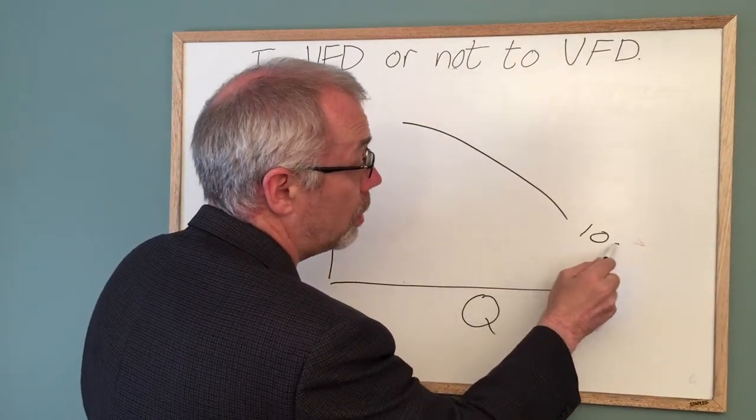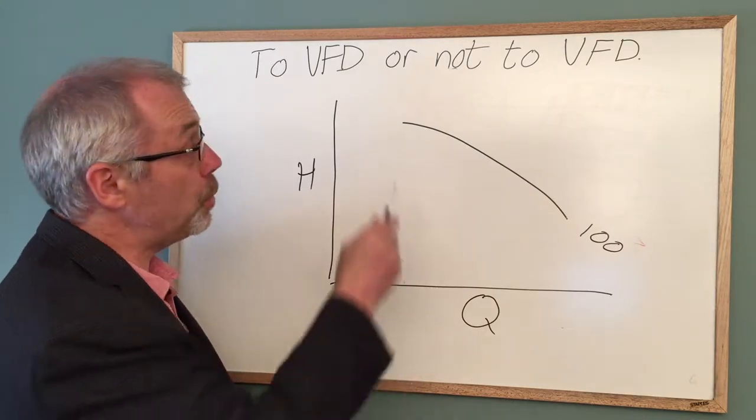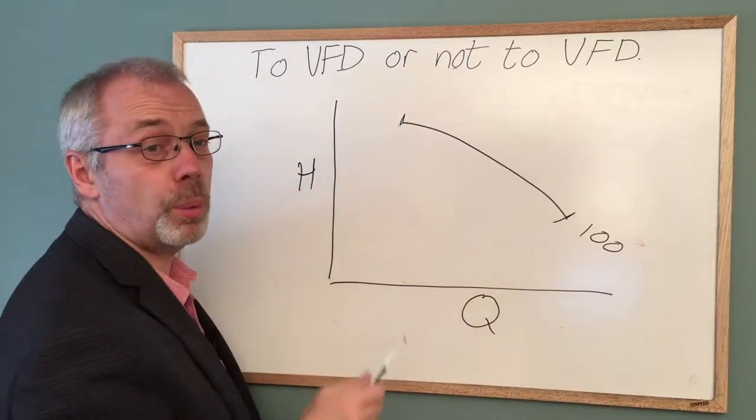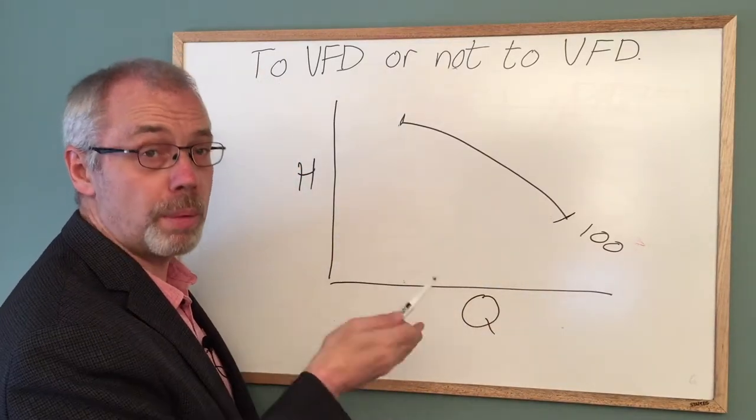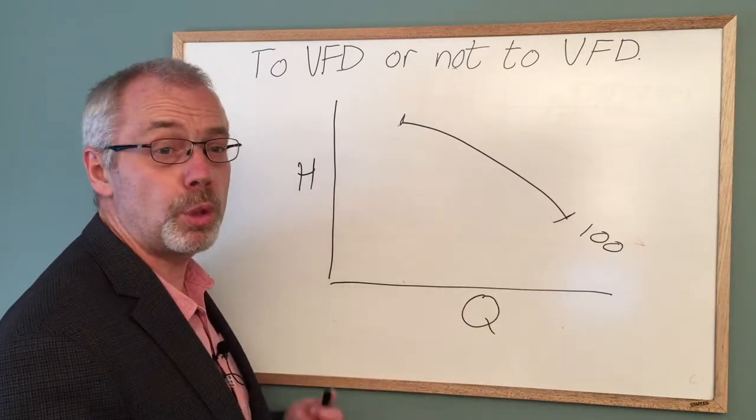At 100% pump speed there will be a certain relationship between discharge head and the flow rate. There will be a minimum flow rate that we should not run below for extended periods of time and a maximum flow rate that we should not exceed.